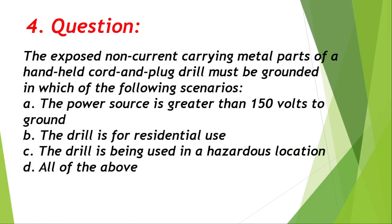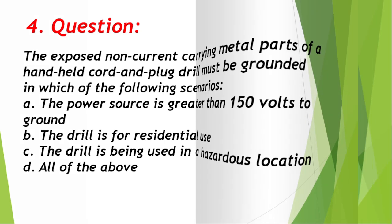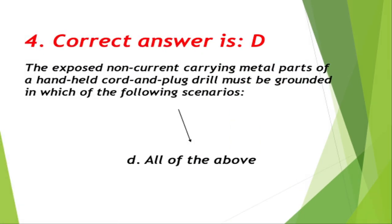Question number 4: The exposed non-current-carrying metal parts of a handheld cord-and-plug drill must be grounded in which of the following scenarios? A. The power source is greater than 150 volts to ground, B. The drill is for residential use, C. The drill is being used in a hazardous location, D. All of the above. Correct answer is D, all of the above.